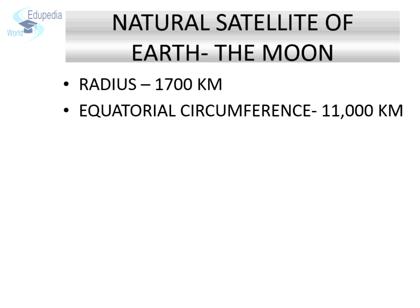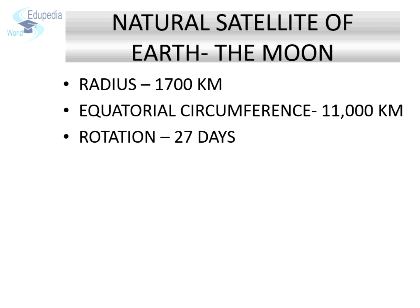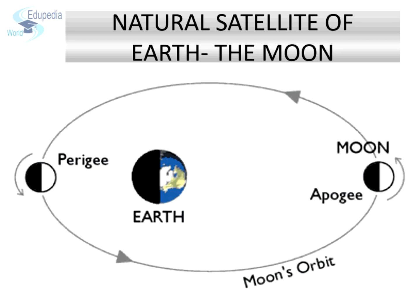The most interesting feature of the moon is that it takes almost the same time to complete one revolution around the Earth and to complete one rotation on its axis. Due to this, we are able to see only one side of the moon every day. The position of the moon when it is farthest from the Earth is known as Apogee, and when it is closest to Earth it is known as Perigee.